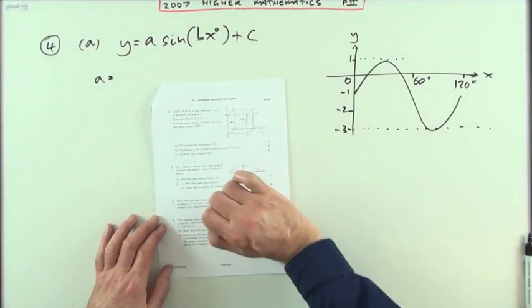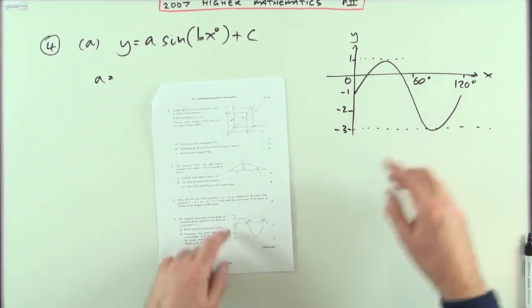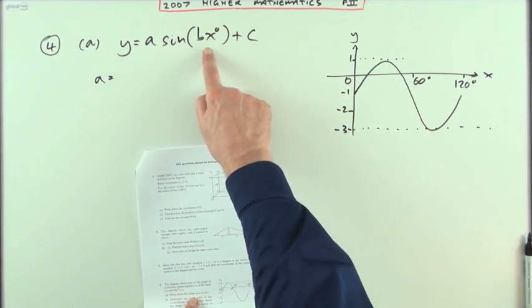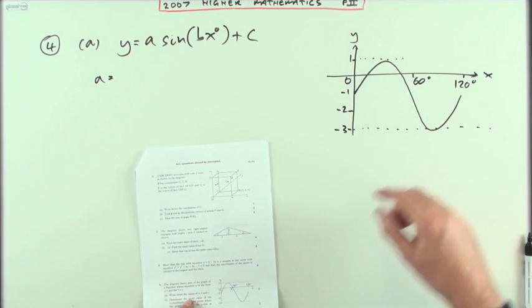Number 4 then, from the 2007 Higher Maths Paper 2, a little transformed trig graph. Part A, just write down the values of the constants that define that graph.